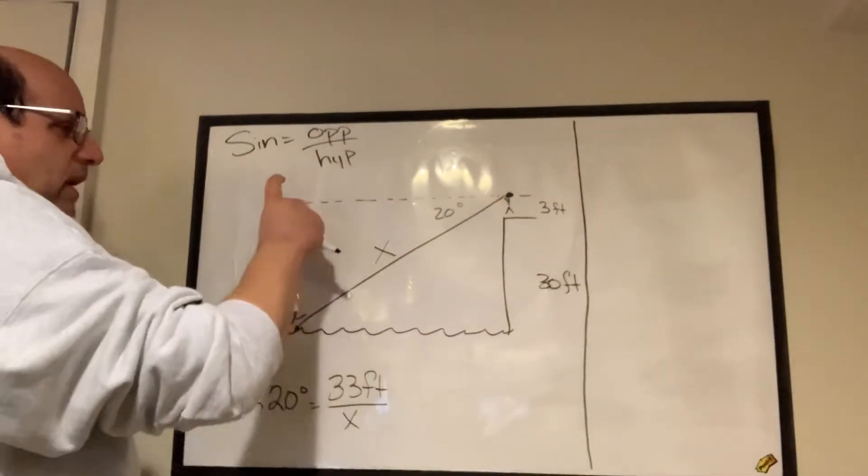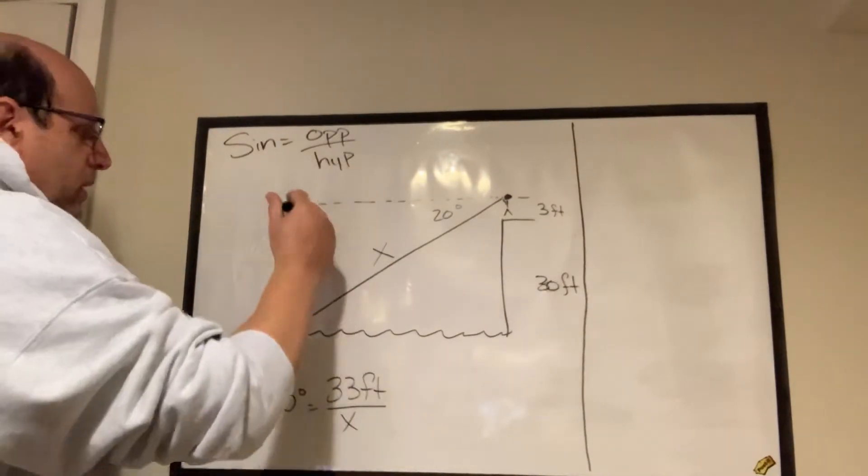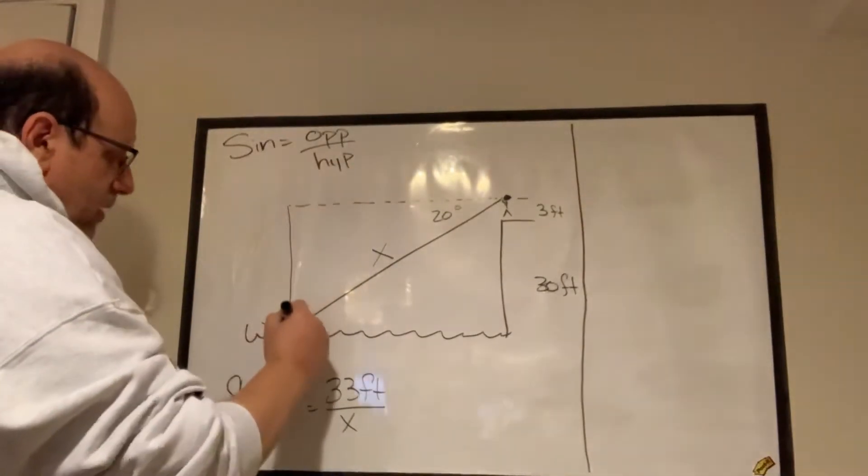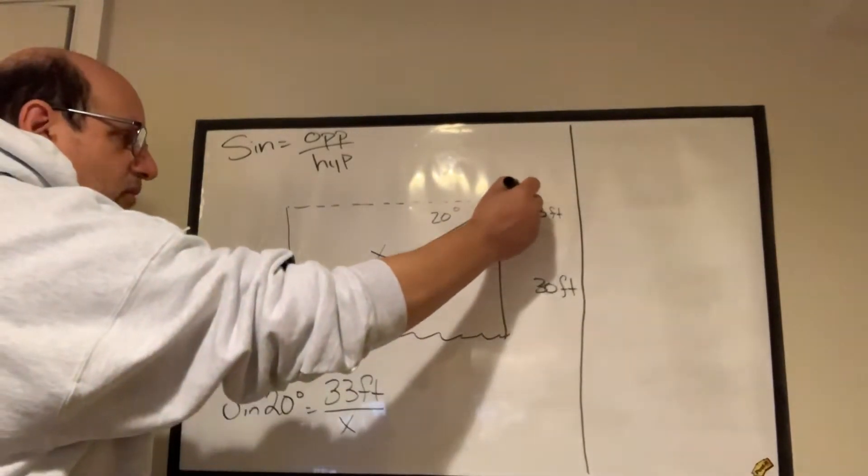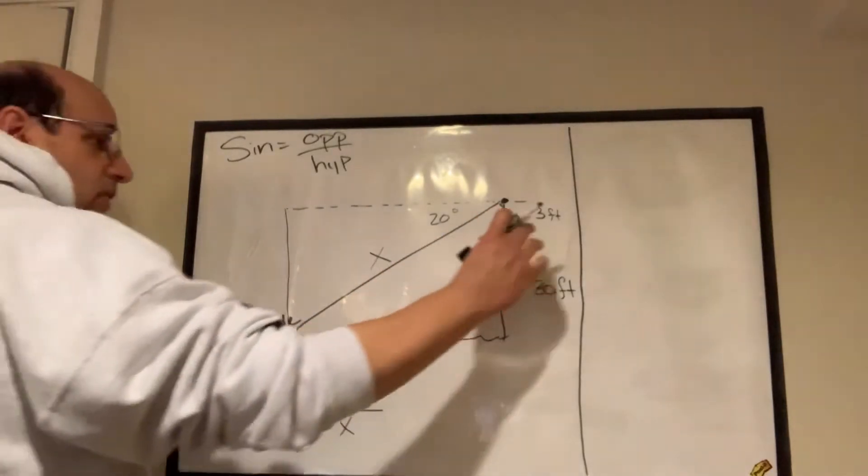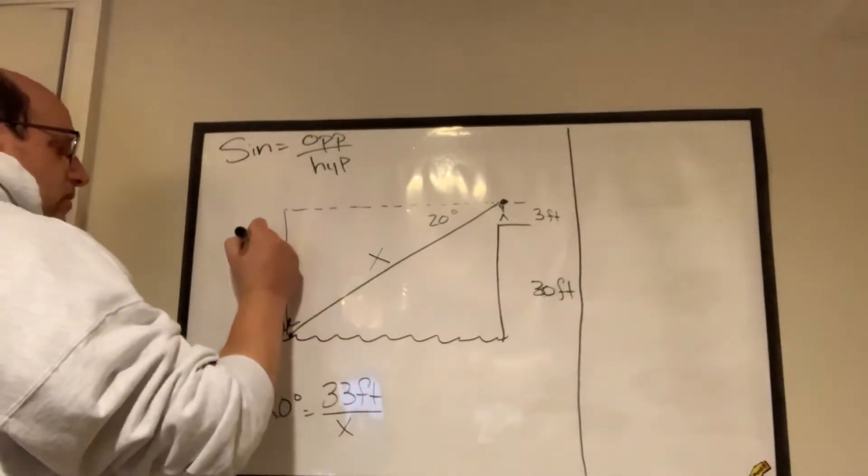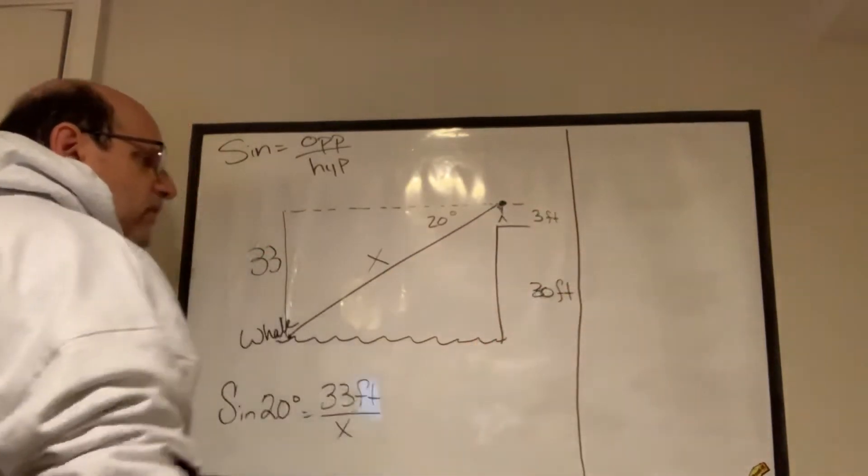But I want to stress to you that the distance from here down to here is the same distance as it is from his eye level down to the water over here. So we can translate. We can add these two things together and make this side 33, because everybody knows that 3 plus 30 is 33.